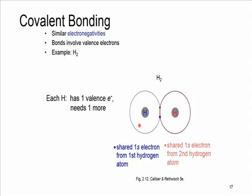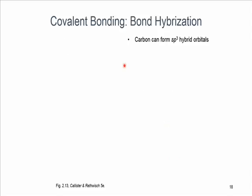As an example, you see here the molecule of hydrogen. Each hydrogen atom has one valence electron and they need one more to reach the electron configuration of an inert gas. As they have similar or same electronegativities, they share their electrons and they reach the configuration of helium. Another example for covalent bonding is bond hybridization.